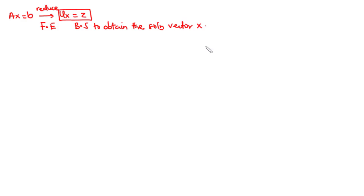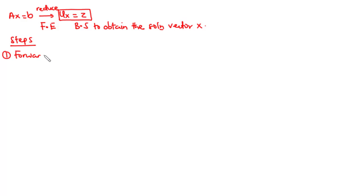These are the two main steps in solving a system of equations using naive Gaussian elimination. The first step is forward elimination of unknowns, and the second step is back substitution.